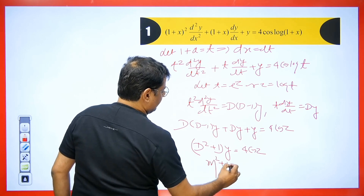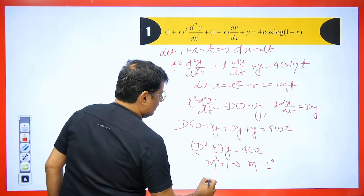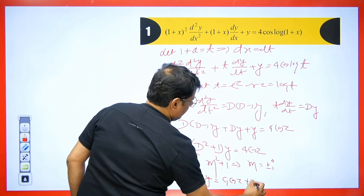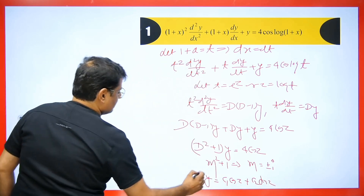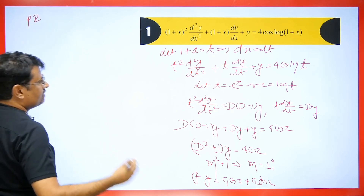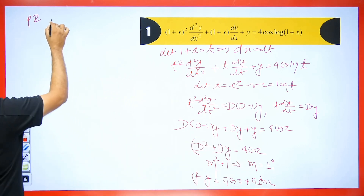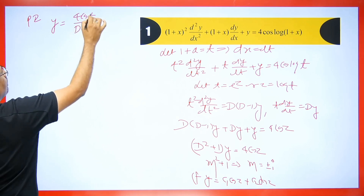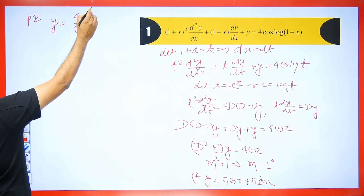At this point the complementary function is y = c₁ cos z + c₂ sin z. Now we find the particular integral. The PI is y = 4 cos z / (d² + 1). Wherever it is d², we put the coefficient of z squared — for cos z the coefficient is 1, so we get minus 1 + 1 = 0 in the denominator.